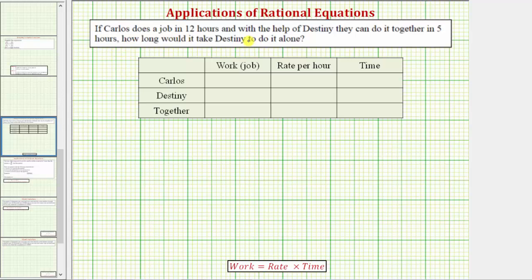If Carlos does a job in 12 hours, and with the help of Destiny they can do it together in five hours, how long would it take Destiny to do it alone?